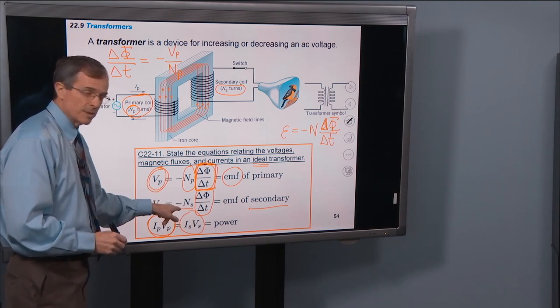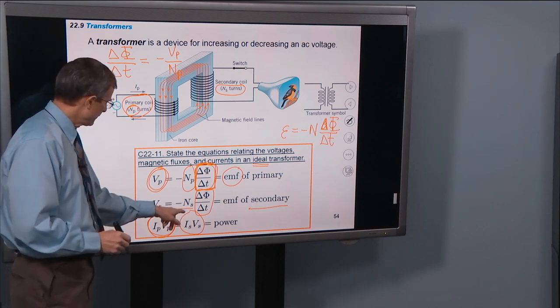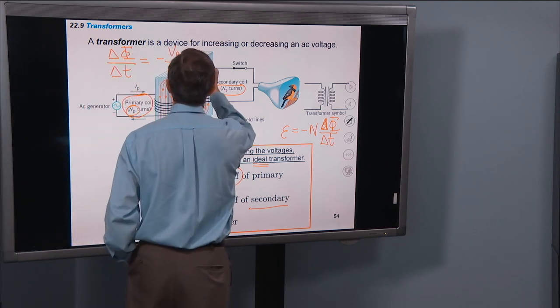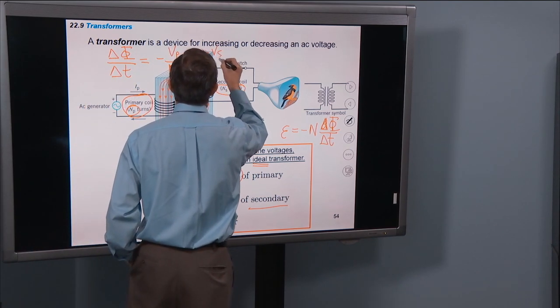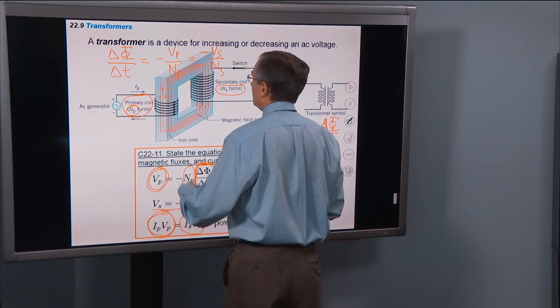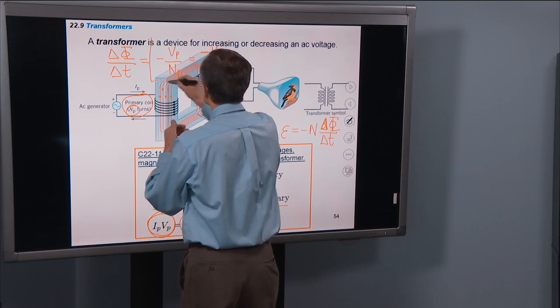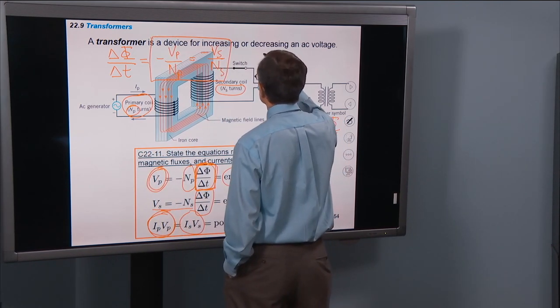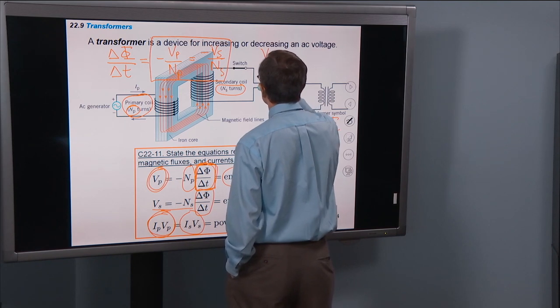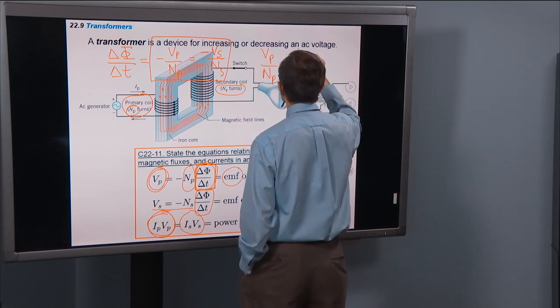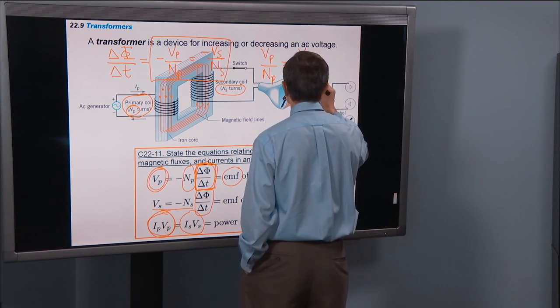if we divide both sides by minus Ns, then we'll get a minus Vs over Ns. Well, then if we just look at this part of the equation, we can see that Vp over Np equals Vs over Ns.